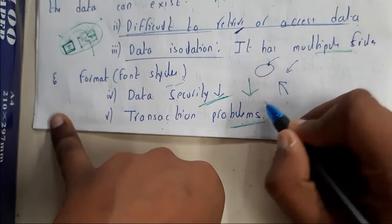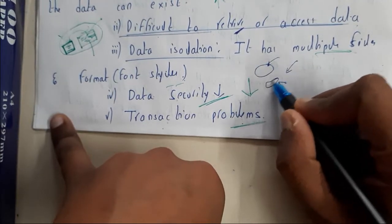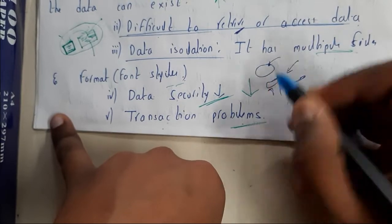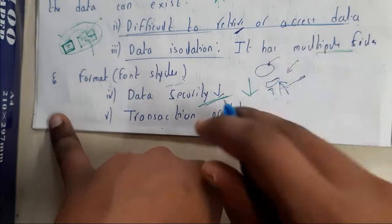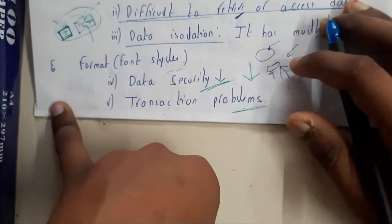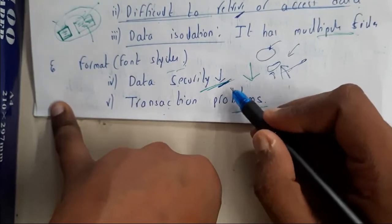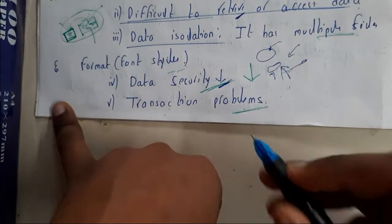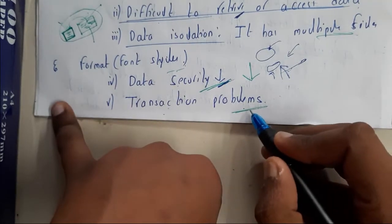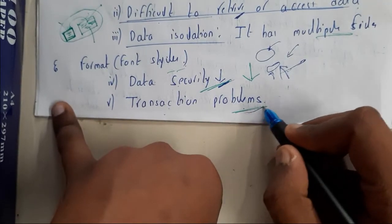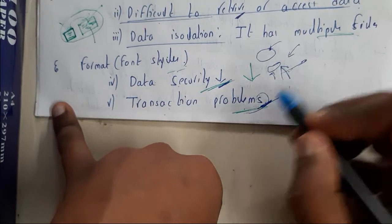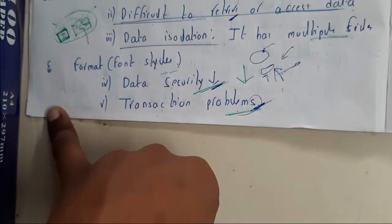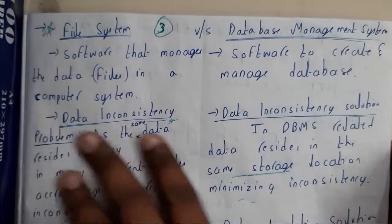We can have Times New Roman text, sizes from 0 to 100, and many variations — this creates problems in file system. Data security is also less when compared to a database management system, and there are many transaction problems. Updating values is really complex, so transactions are not efficient in file system.